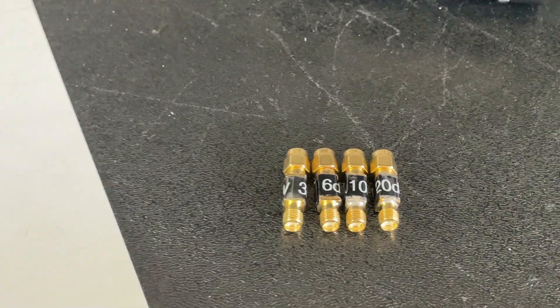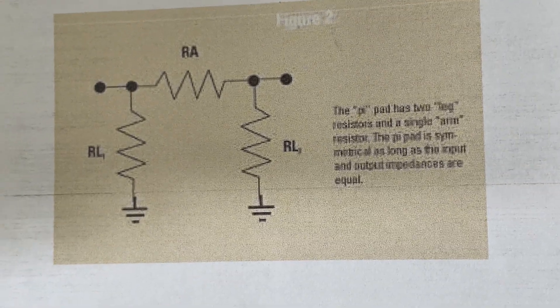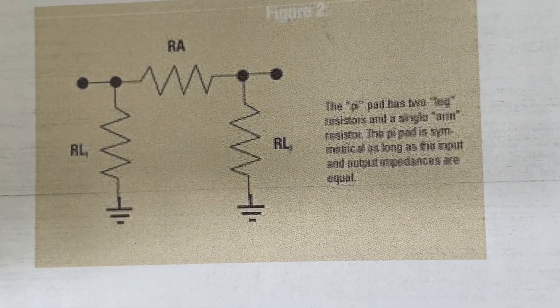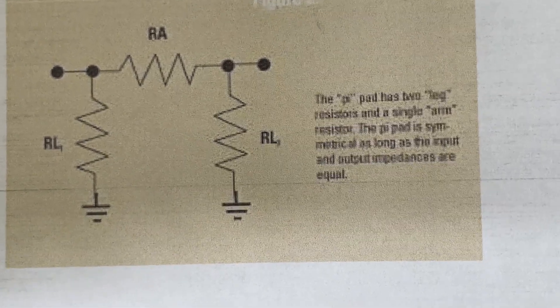So for 3, 6, 10, and 20, I came up with this. Actually, I got this online. We have RA as the feed-through resistor, Pi network type setup here. The RL1 and RL2 are identical values.